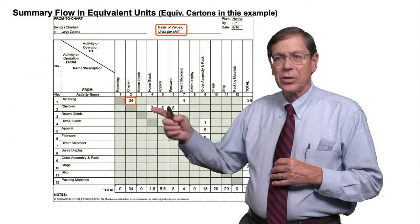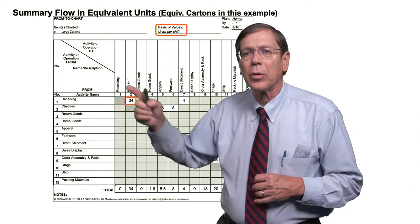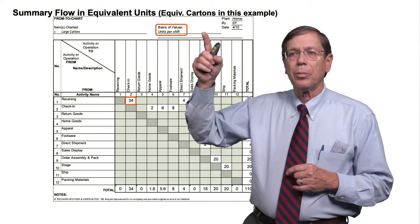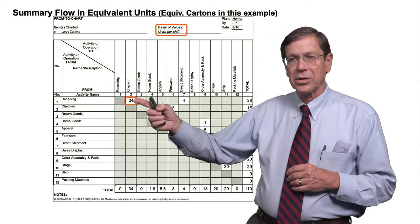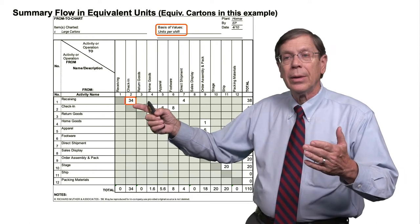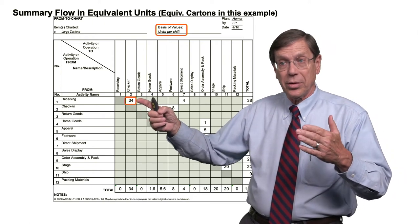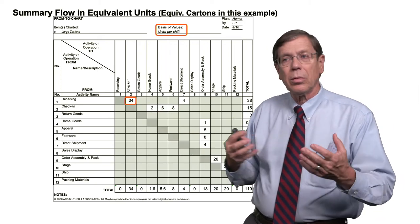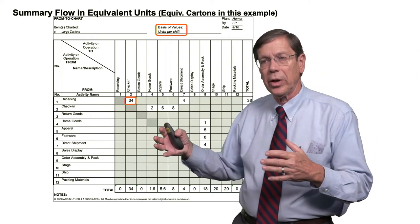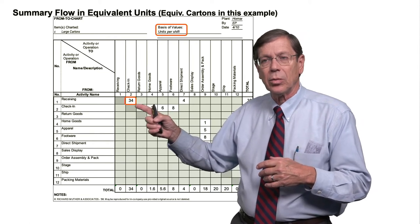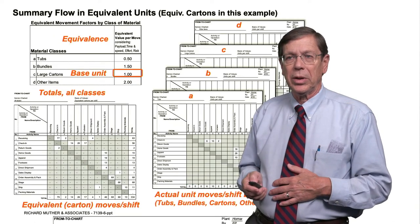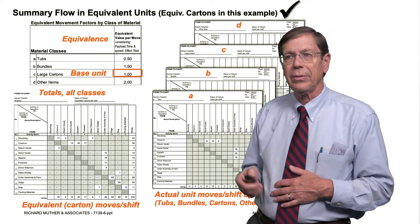And I can put this in in actual units. Now, what's happening over here is every cell here is being multiplied. If this is A, class A, tubs, it's going to be multiplied by 0.5 before it's summed over here. So this is a roll up or a summation of individual from-to charts where the actual units are being factored by their equivalence measure before being summed over here. So this gives me equivalent carton moves per shift. It's another way to do it. So if you look here, this is 34, which one is this? 34 large cartons moving from receiving to check-in per shift. Instead of whatever we had, we had 42 kilograms of cartons per hour. This is actually 34 cartons. That's how many we actually move.